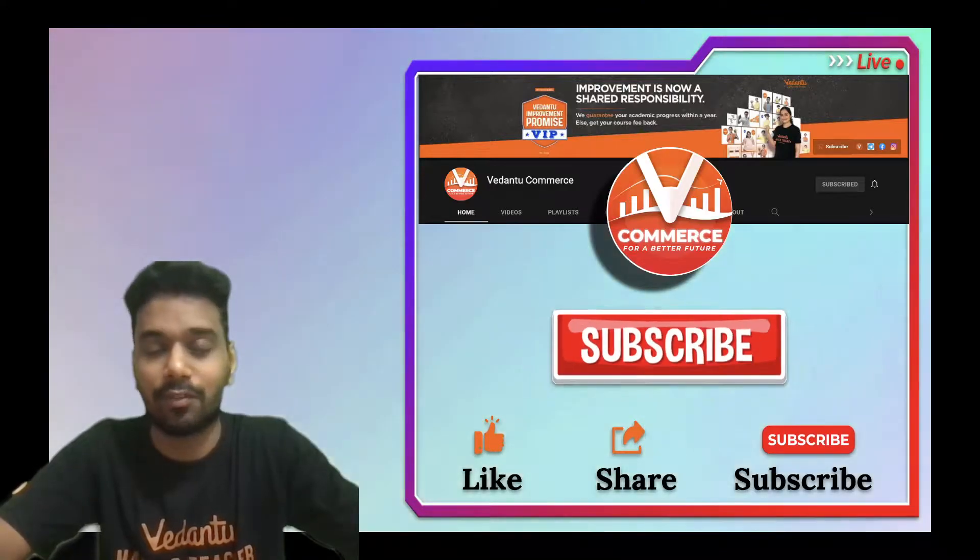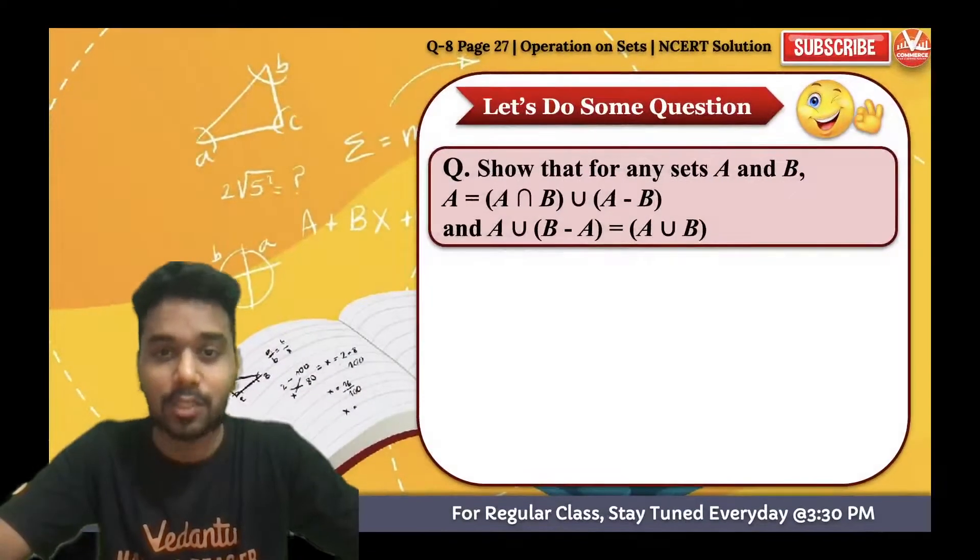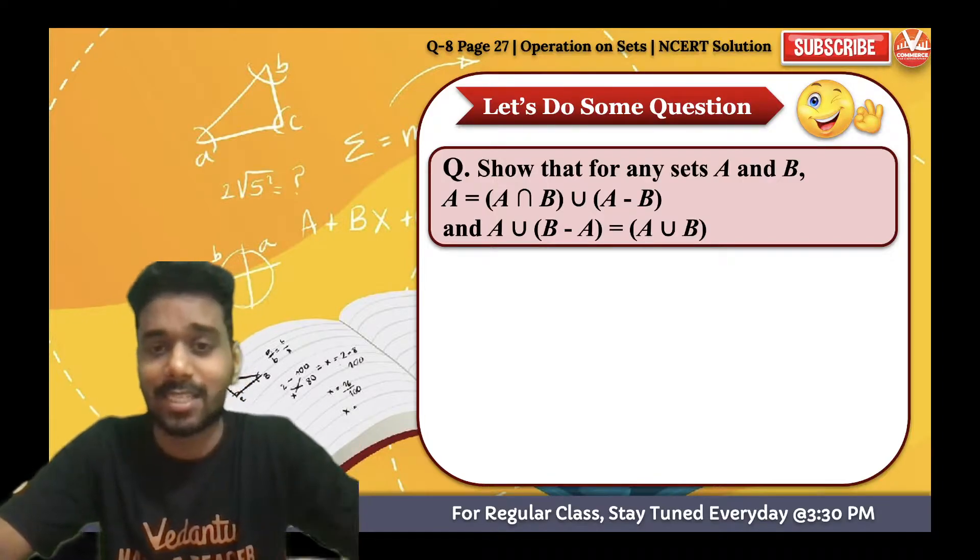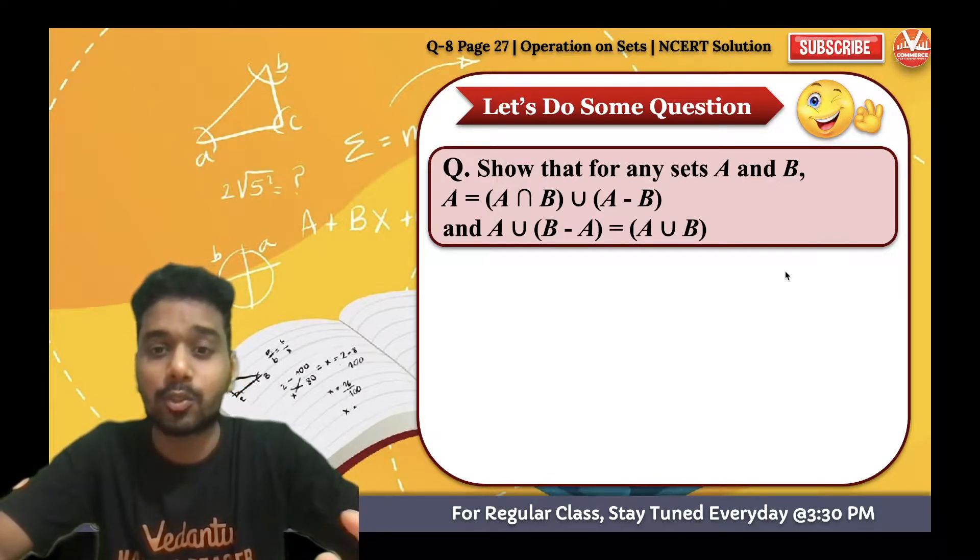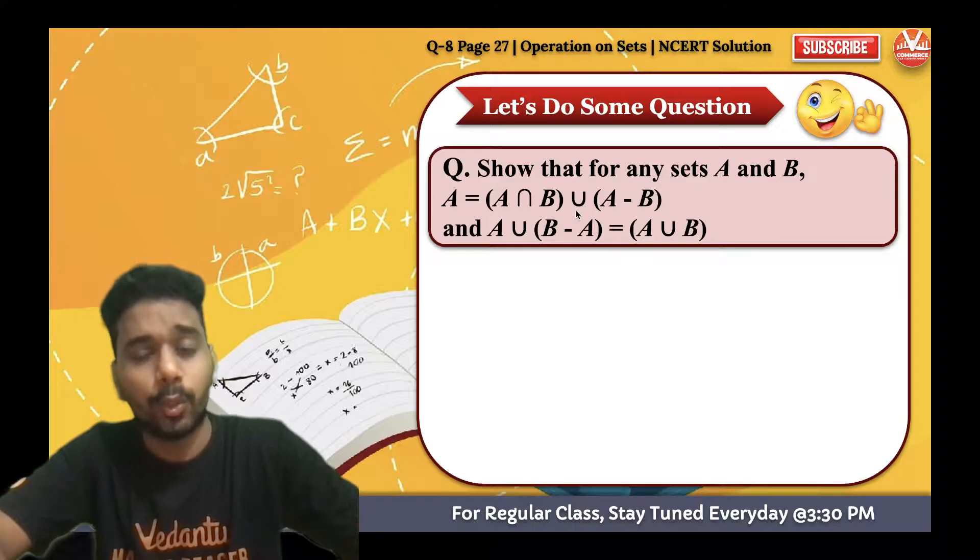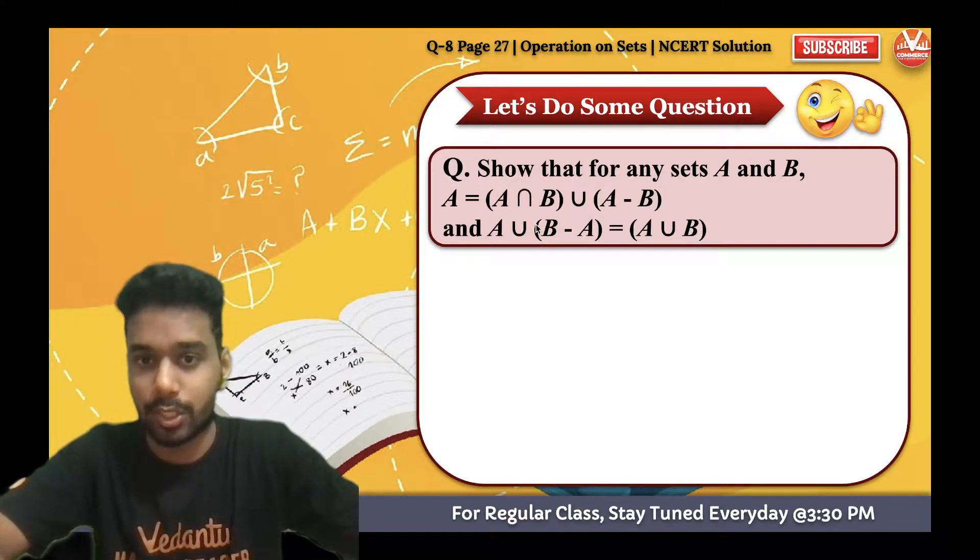So guys, questions like this show that for any sets A and B, A is equals to A intersection B union A minus B. And the second question is A union B minus A is equals to A union B.